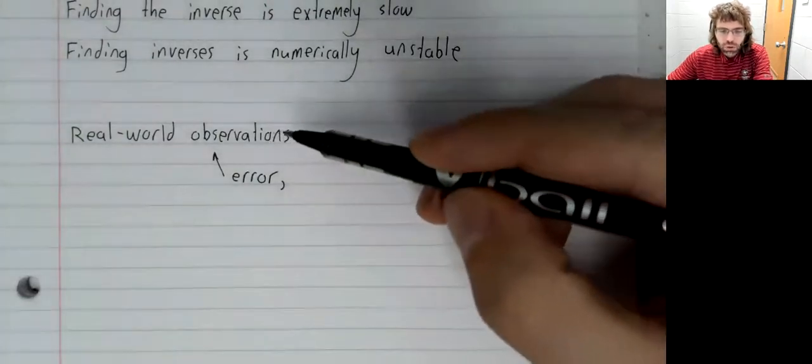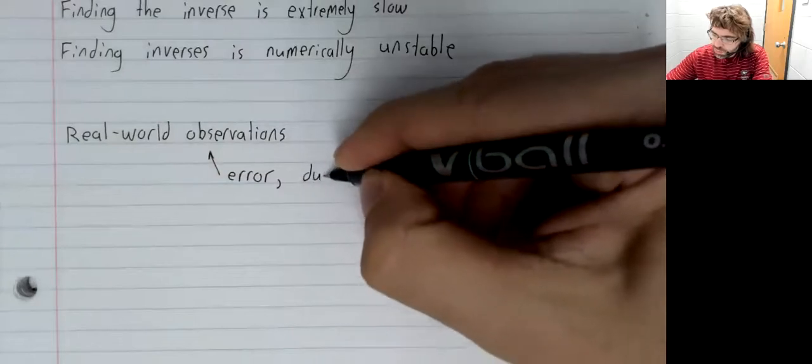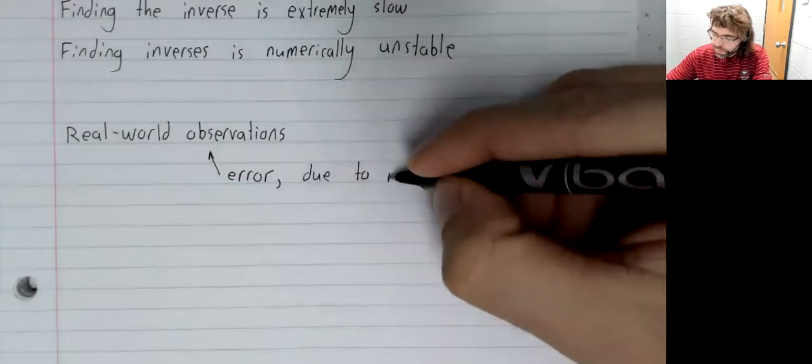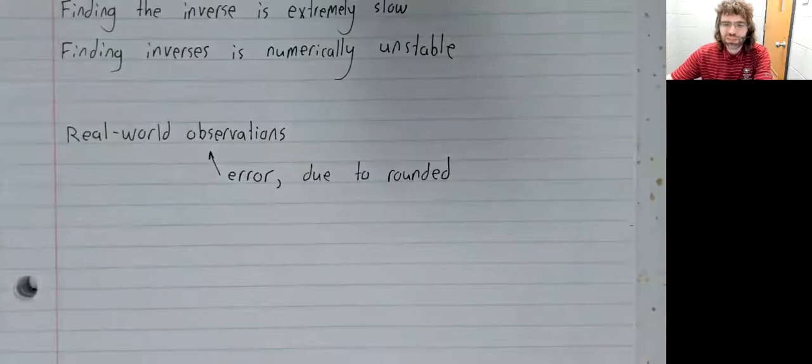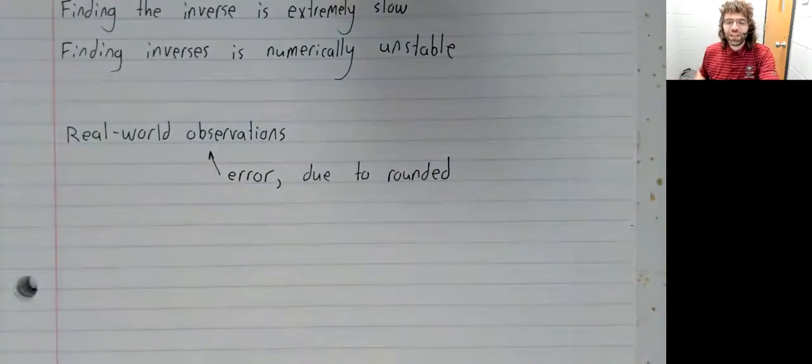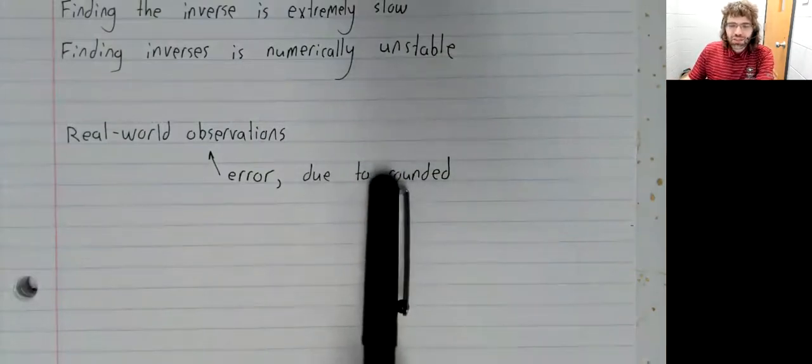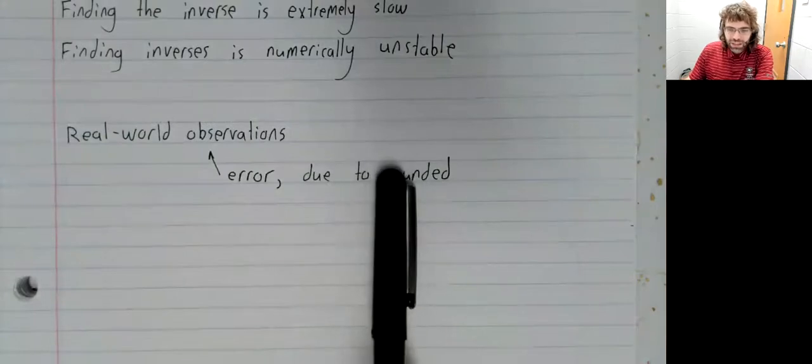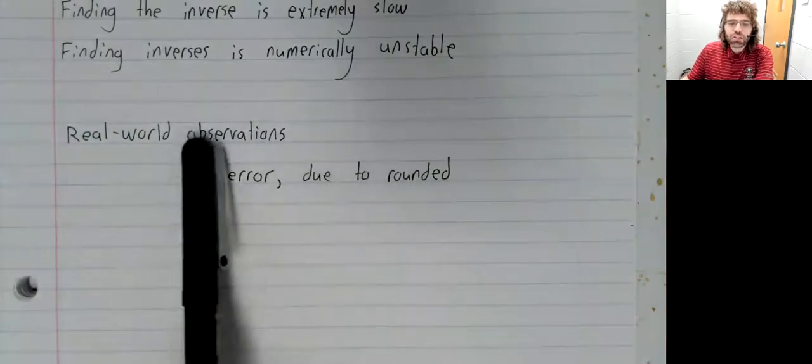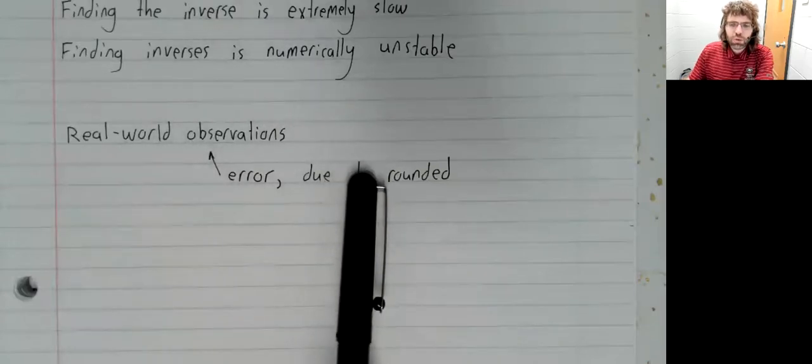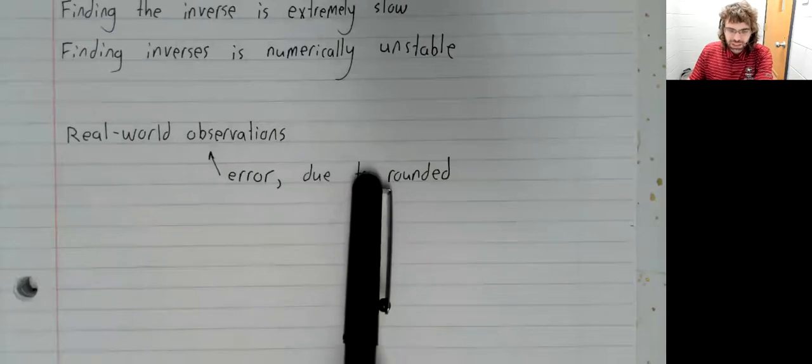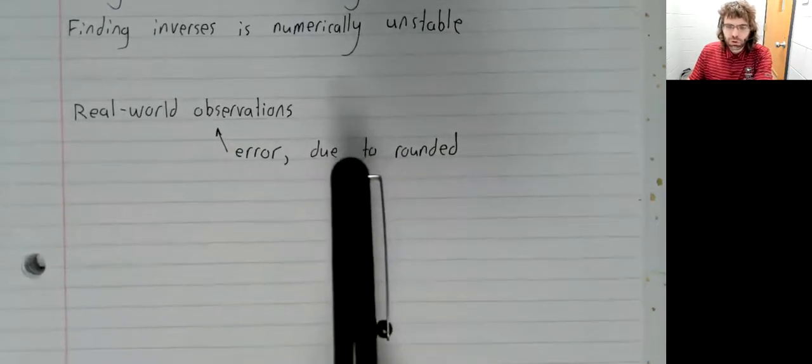whereas our observations are going to not be infinite decimals. We can't enter infinite decimals into our calculator. Our data is going to be rounded. So it's going to be an approximation of the real world observations, but it's not going to be exactly the real world observations.